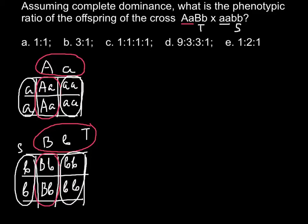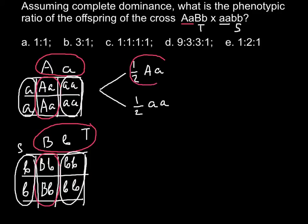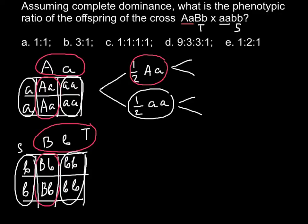When we build the Fork Line structure, we start with our first allelic frequency that we obtained. So we have one half that is going to be capital A small a — this is going to be red color — and one half that is going to be small a small a — this one is going to be white color. Once again we build forks, and here we would have one half tall plants, that is going to be capital B small b.